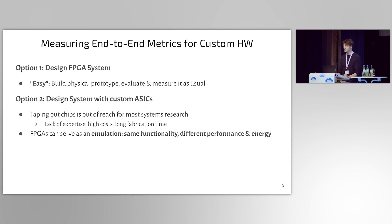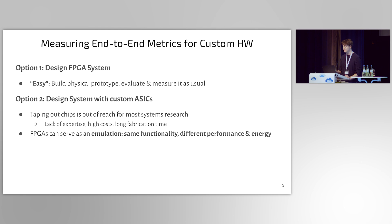Since we established that these end-to-end metrics are essential, let's talk about how we can actually measure them. It's important to differentiate between two options for implementing the hardware accelerator. When the system is designed to use an FPGA, the evaluation is straightforward — we can just develop a physical system prototype and directly measure it. However, if the system is meant to use an ASIC, it's really not that simple. The chip has to be manufactured first, which incurs huge costs and long fabrication times, so this option is out of reach for most systems research.